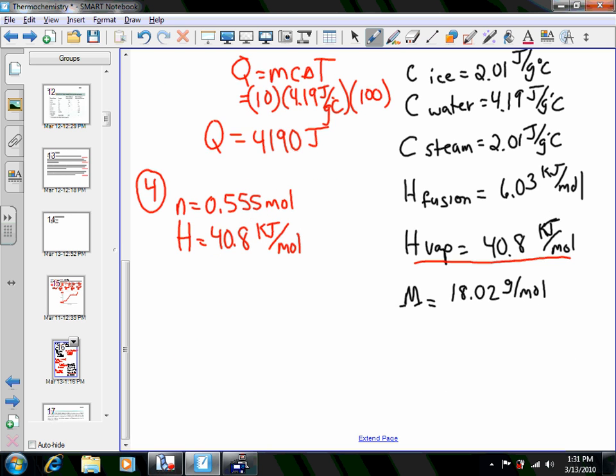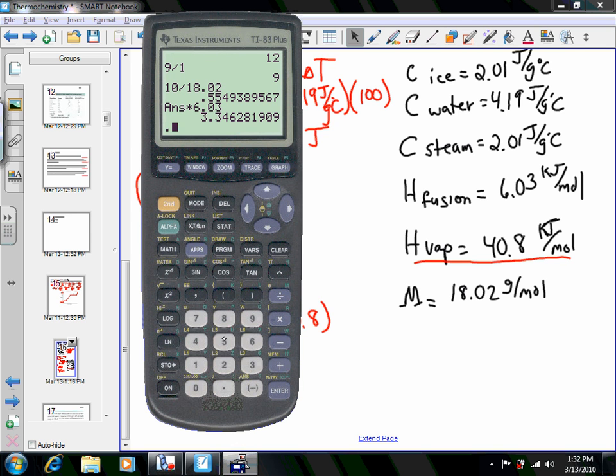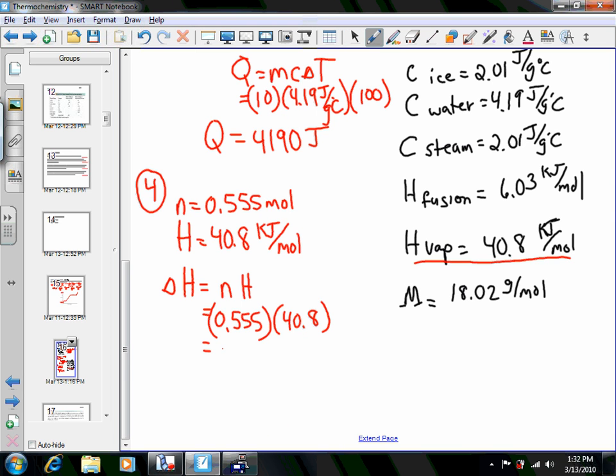So we can figure out the delta H for the boiling point. And we would take N times H again. Our 0.555 times 40.08 would give us a number of kilojoules. So we needed to take the 0.555 times 40.8 gives us 22.644. Remembering our units, that is the number of kilojoules. So we know you have 22,644 joules. Tons of energy there.